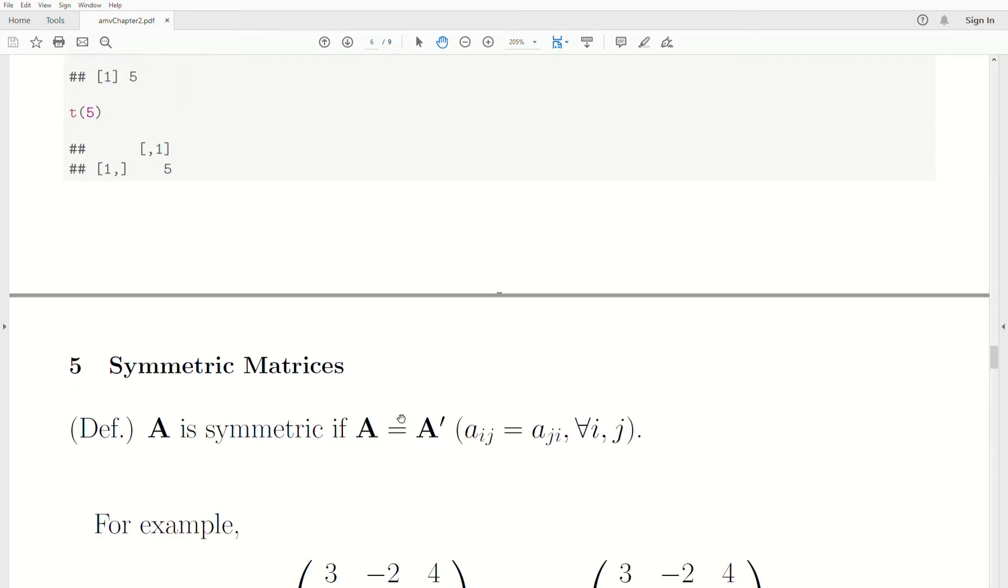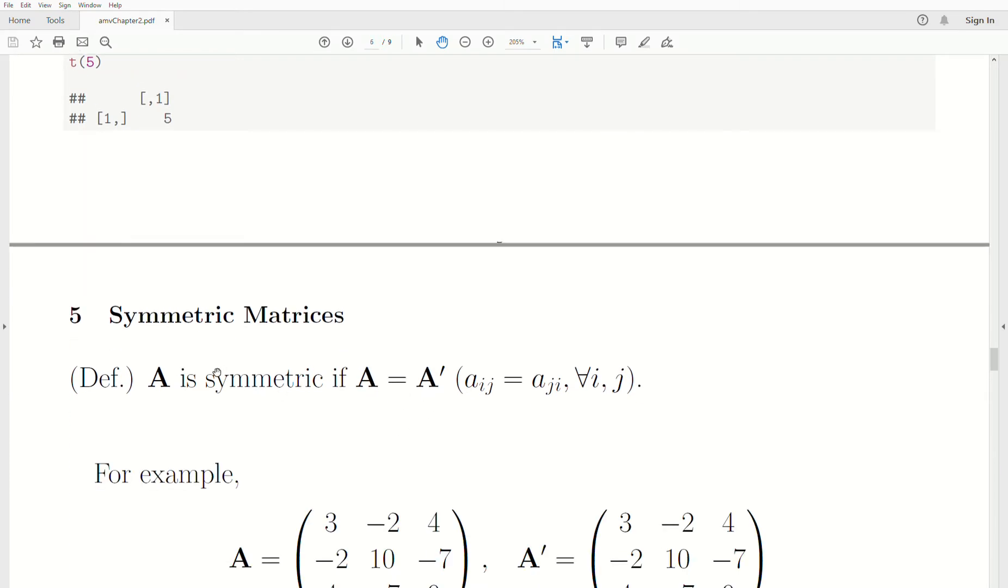So let's look at symmetric matrices. Now a symmetric matrix is symmetric if it equals its transpose. So if A equals A transpose, then it's a symmetric matrix. And to write that mathematically, you say Aij is equal to Aji, that means it's been transposed. If those are equal, then it's a symmetric matrix and that's for all i and j.